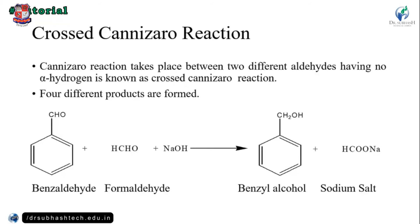After the three-step mechanism, we learn about the cross Cannizzaro reaction. The regular Cannizzaro reaction takes place between two identical aldehyde molecules, but the cross Cannizzaro reaction takes place between two different aldehydes, both having no alpha hydrogen. For example, benzaldehyde and formaldehyde — two different aldehydes — react together to give four products: benzyl alcohol and a sodium salt.